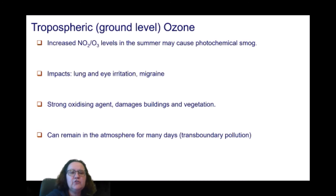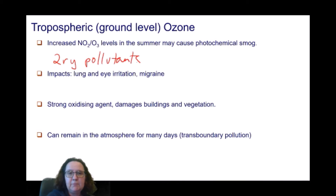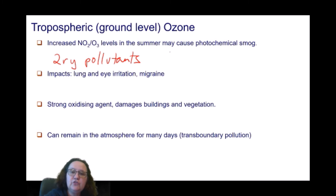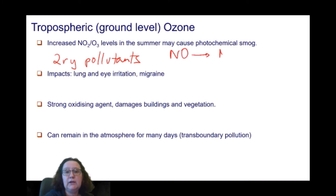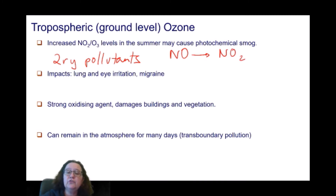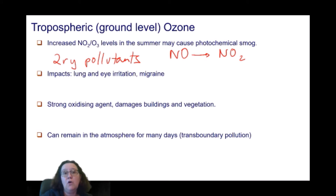Both nitrogen dioxide and ozone are what we call secondary pollutants, because they are not released directly by an anthropogenic source. What is released is nitrogen monoxide — that is a primary pollutant — which then evolves to nitrogen dioxide, a secondary pollutant. The same applies to ozone: it is not released directly from traffic exhaust, but is formed in the atmosphere as a result of the chemicals released by burning petrol.